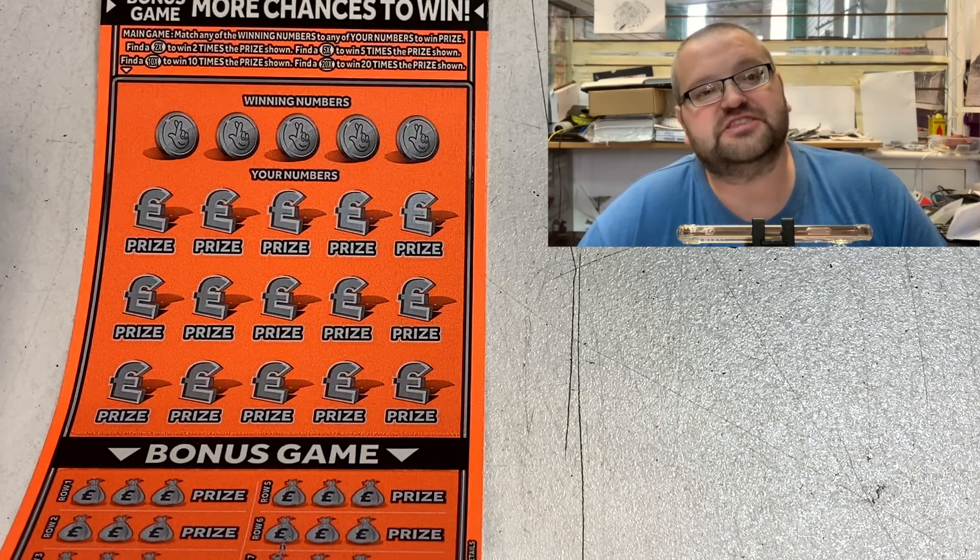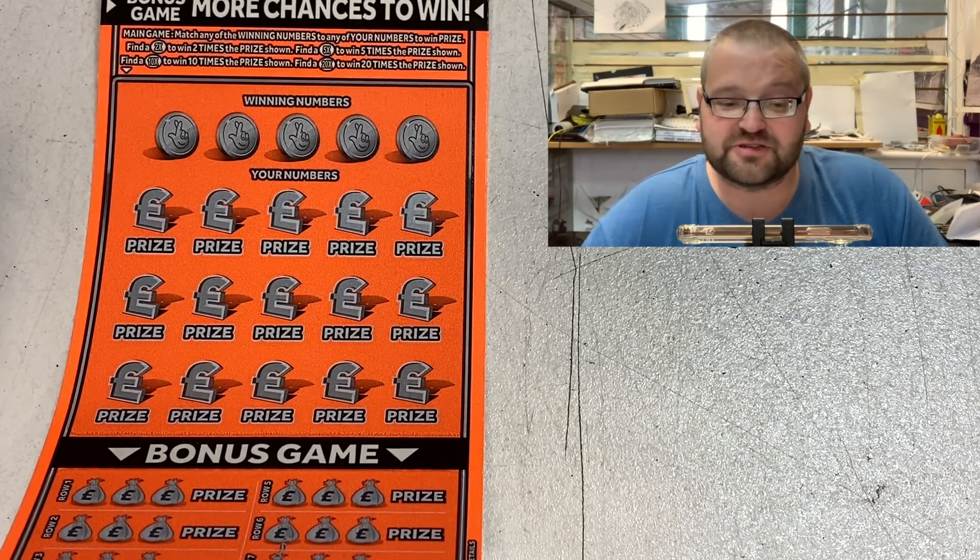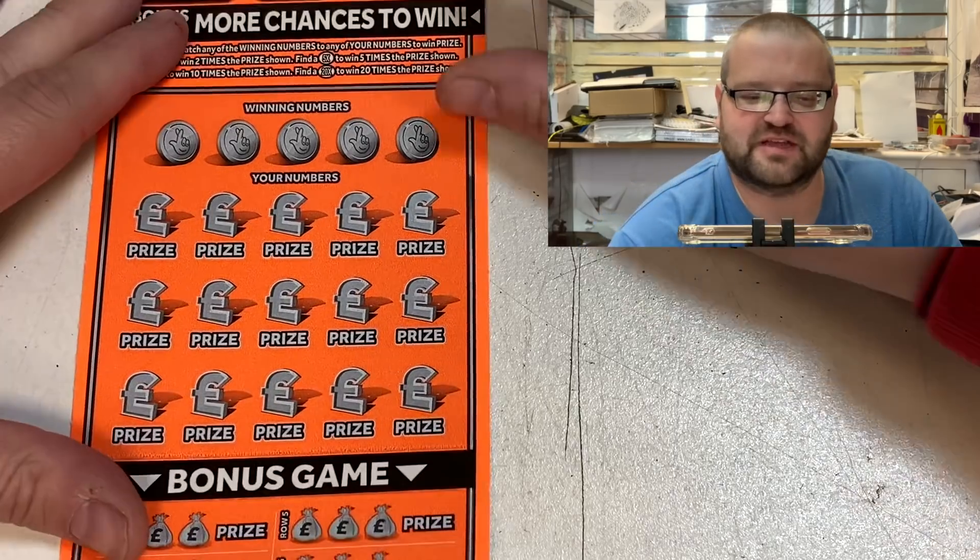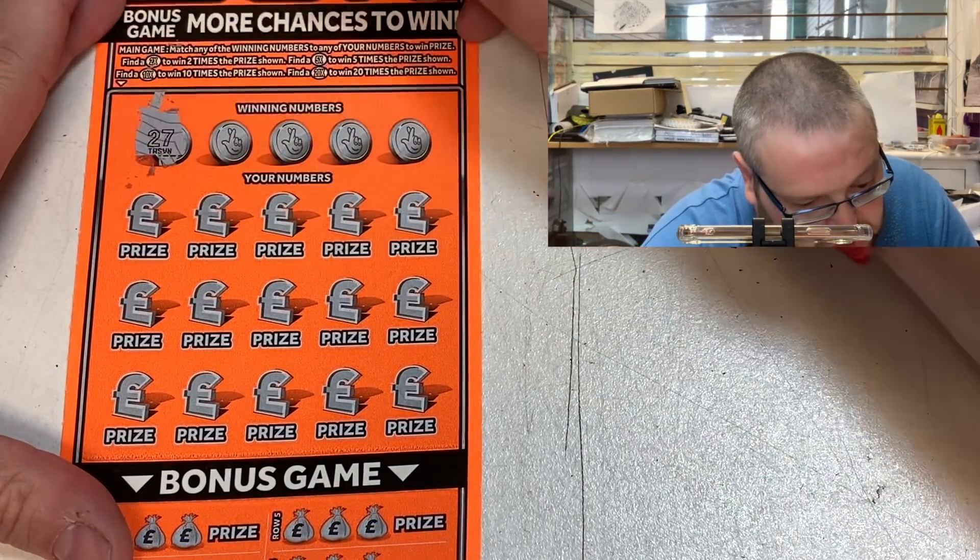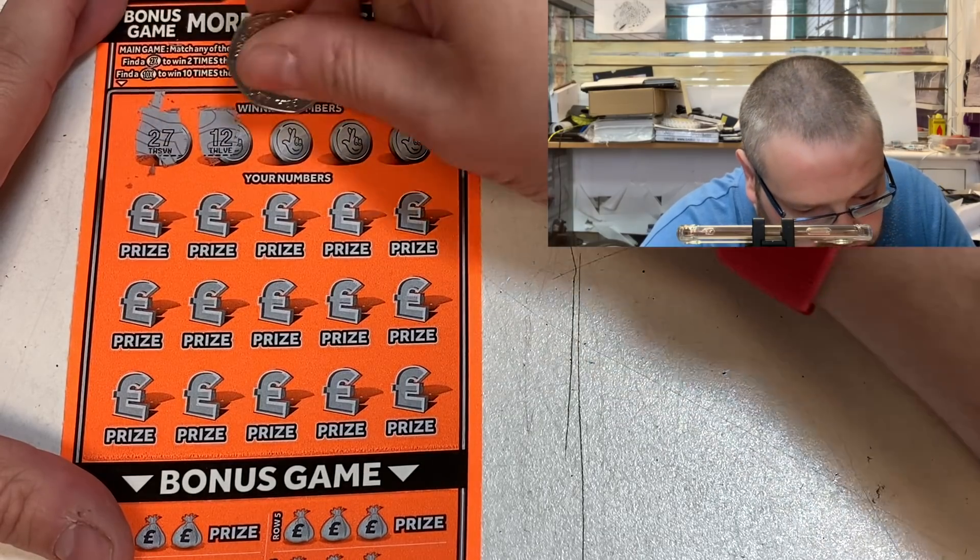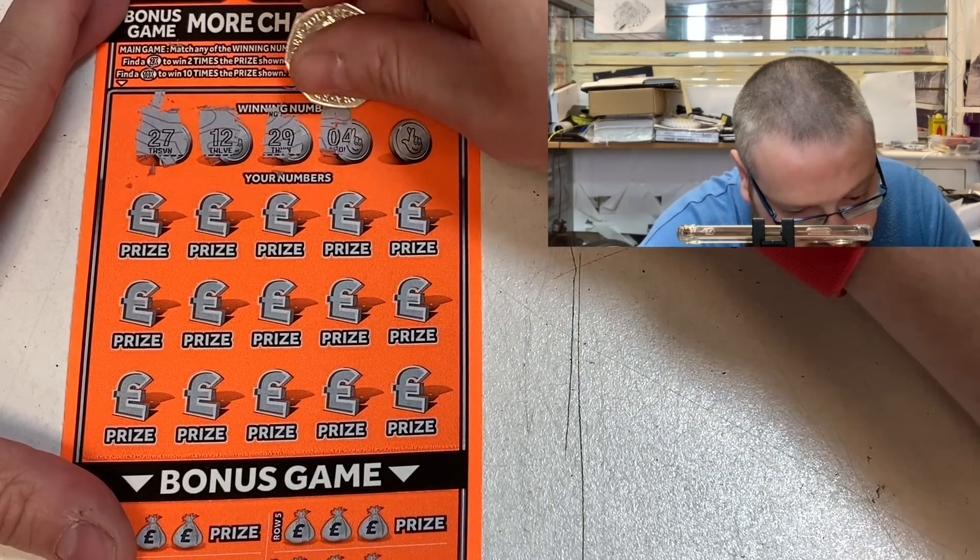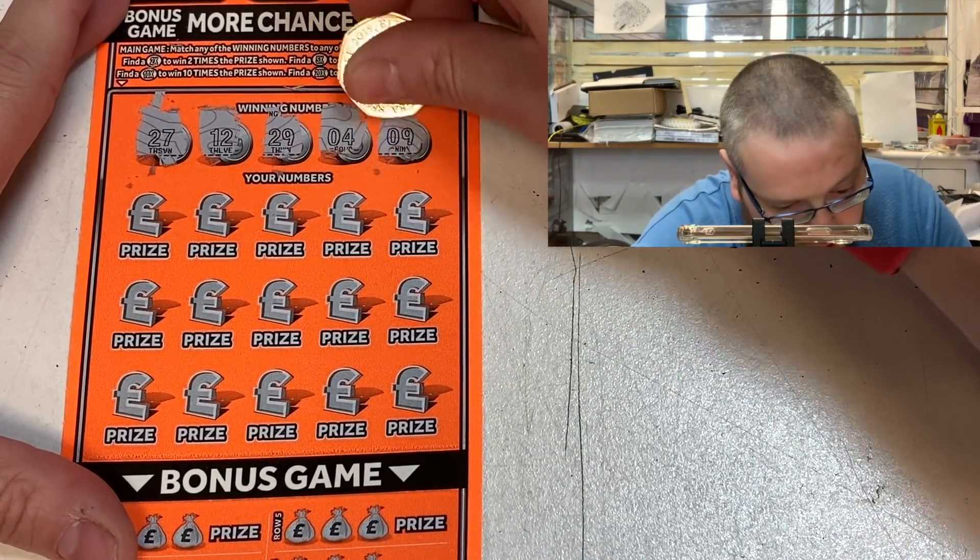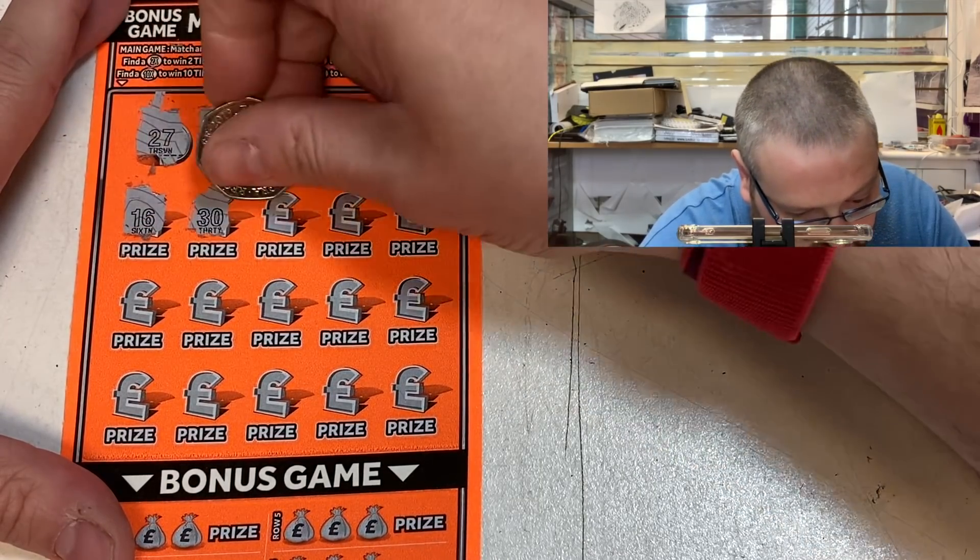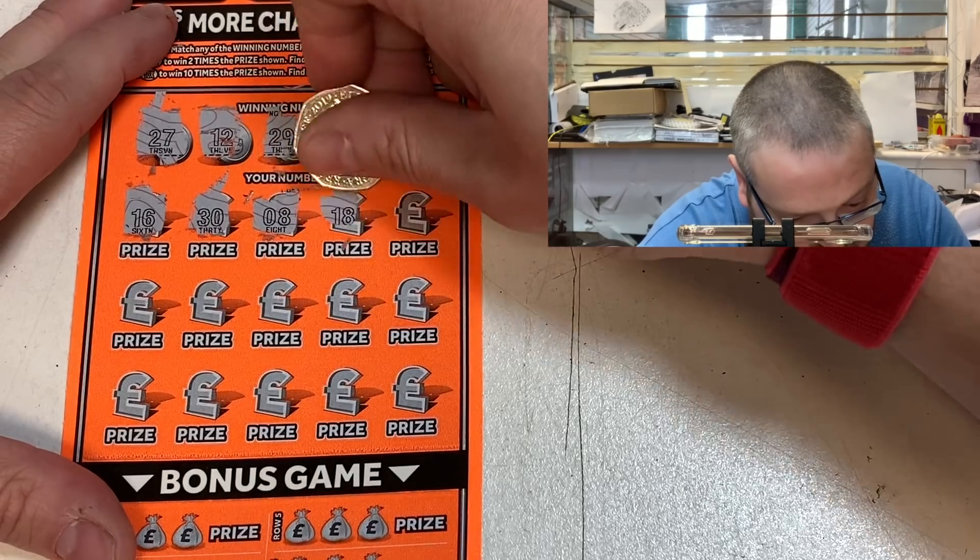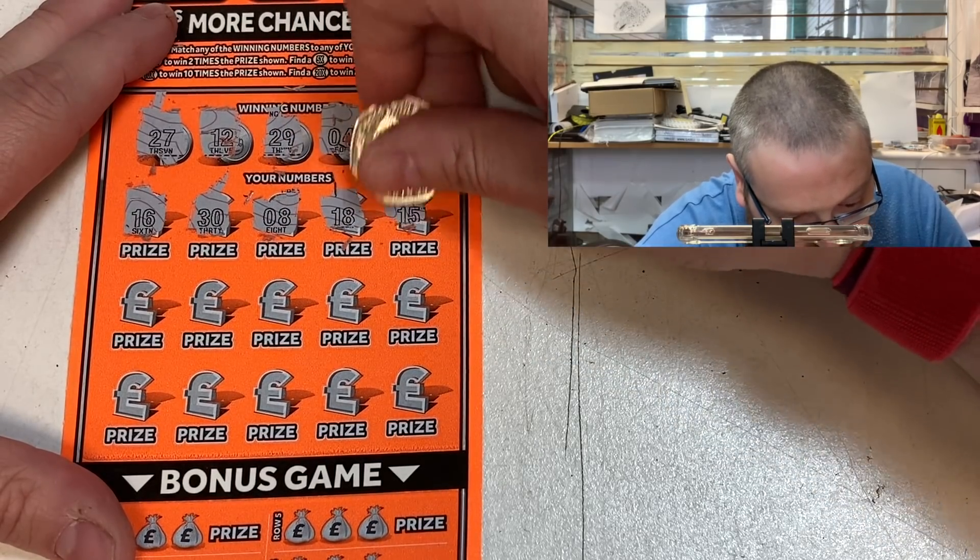Hi, this is Paul from Sailor Mobiles and this is 20 times X week, day number seven. Here we go, let's do this. 27, 12, 29, 4, and number 9. Come on now, let's end on a massive one.